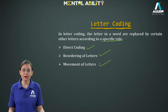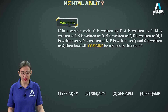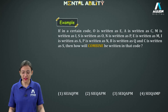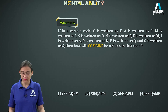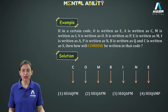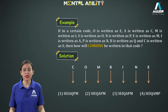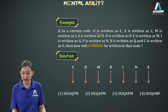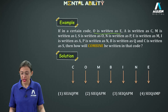Here is our first example. If in a certain code, O is written as E, A is written as C, M is written as I, S is written as O, N is written as P, E is written as M, I is written as A, P is written as N, B is written as Q, and C is written as S — then how will COMBINE be written in that code? We are given with direct code: O is written as E, A is written as C.